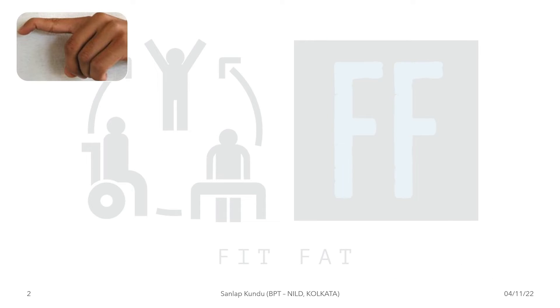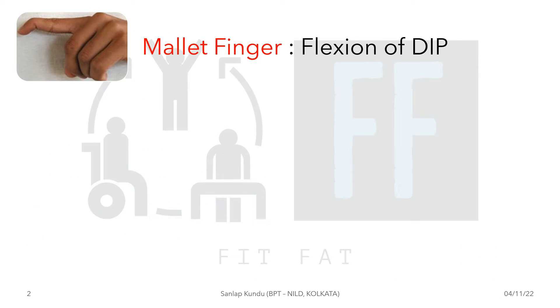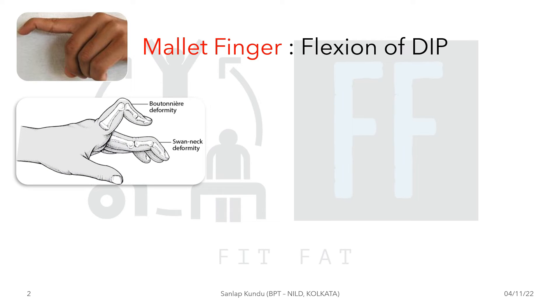The first figure shows mallet finger, which is the flexion of the distal interphalangeal joint. In the second picture, you can see both boutonière deformity and swan neck deformity.